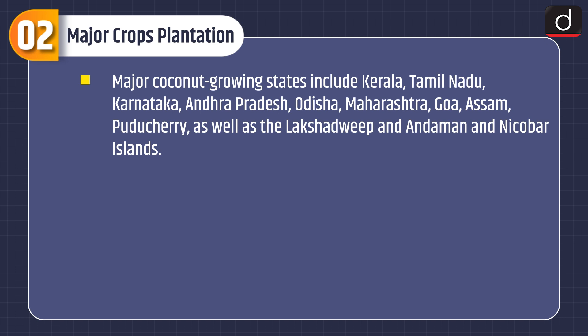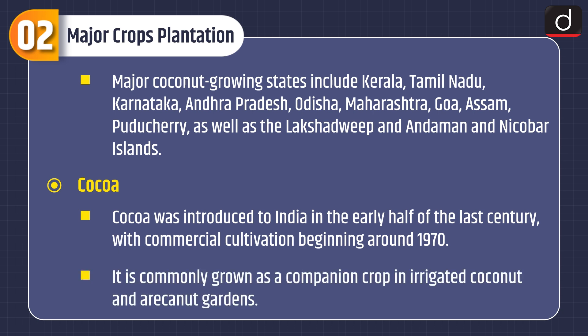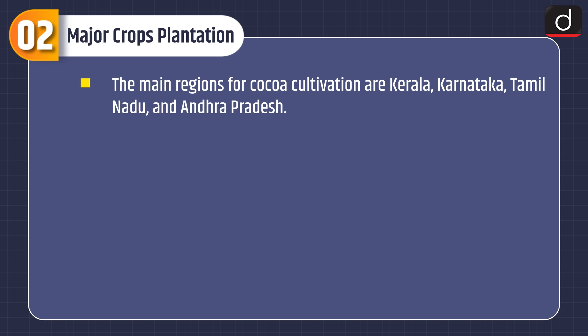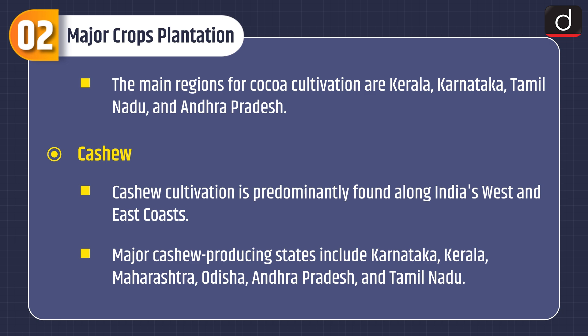Cocoa was introduced to India in the early half of the last century, with commercial cultivation beginning around 1970. It is commonly grown as a companion crop in irrigated coconut and areca nut gardens. The main regions for cocoa cultivation are Kerala, Karnataka, Tamil Nadu and Andhra Pradesh. Cashew cultivation is predominantly found along India's west and east coast. Major cashew-producing states include Karnataka, Kerala, Maharashtra, Odisha, Andhra Pradesh and Tamil Nadu.